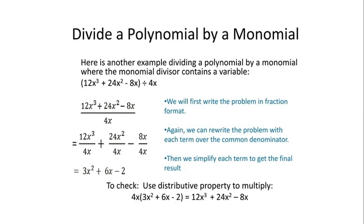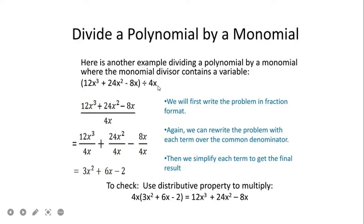Here is another example of dividing a polynomial by a monomial. Our polynomial here is 12x cubed plus 24x squared minus 8x, divided by a monomial, which is 4x. The difference from our previous example is that our divisor now has a variable. So 4 is our numerical coefficient and x is our literal coefficient — 4x is one term, which we call a monomial. So we will first write the problem in fraction format.